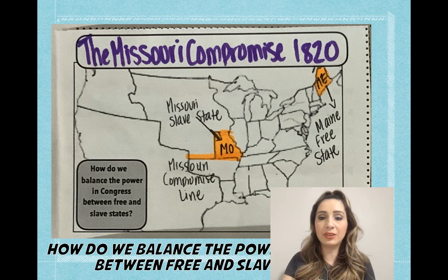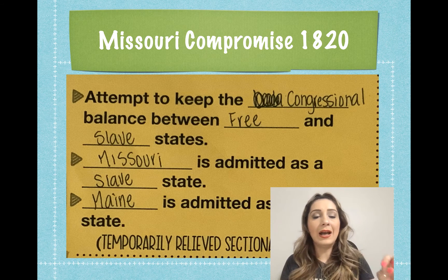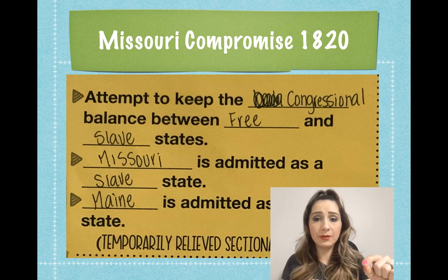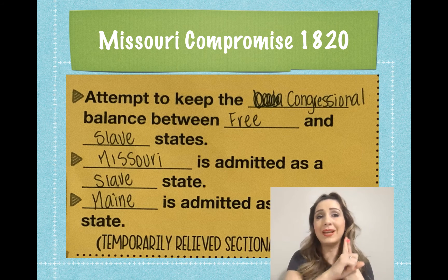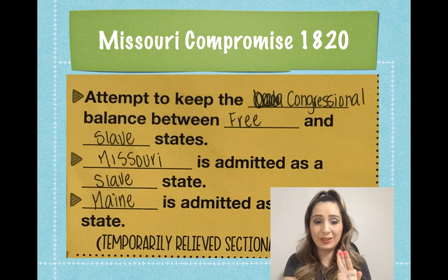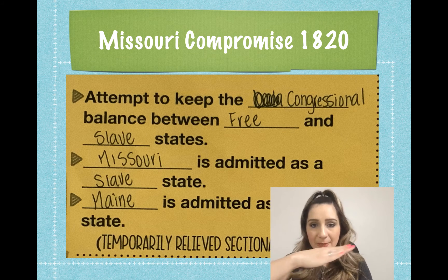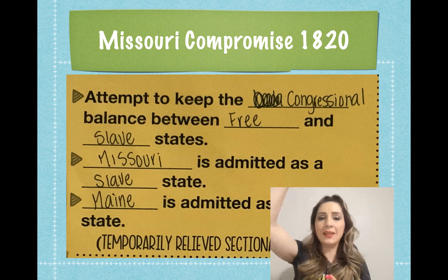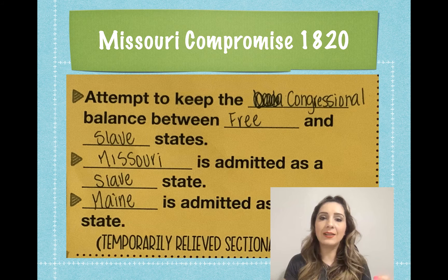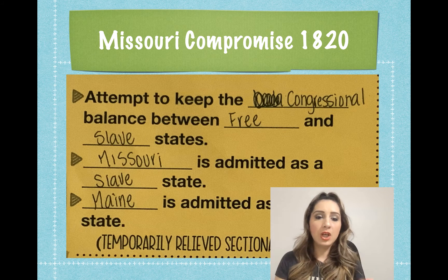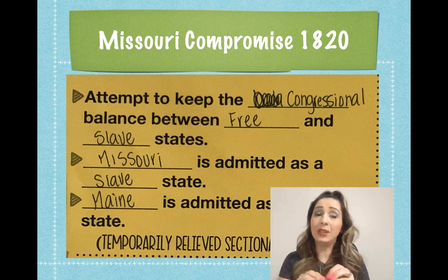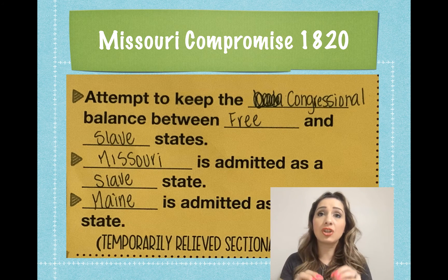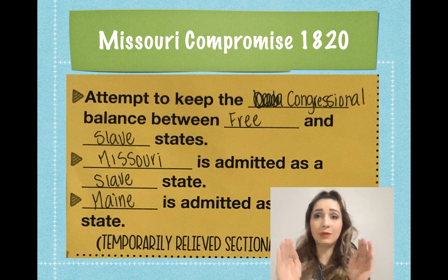There was an attempt to keep the balance in Congress between free and slave states. Three things were decided: Missouri admitted as a slave state, Maine admitted as a free state, and the Missouri Compromise line — north of it no slavery, south of it slavery allowed. This temporarily relieved sectional tension.